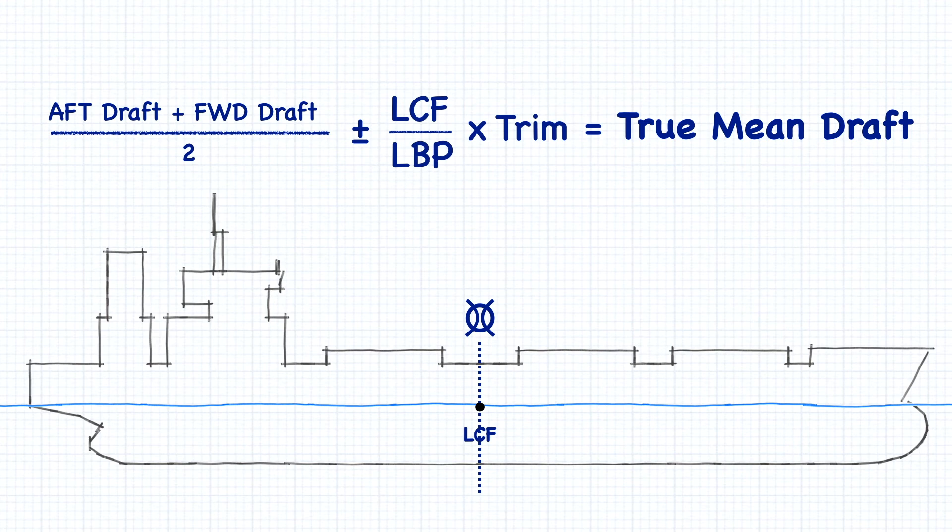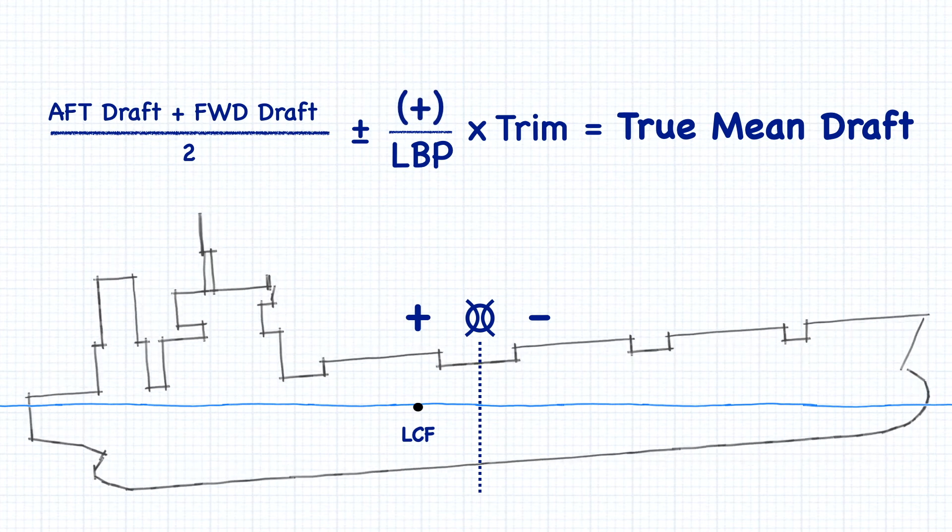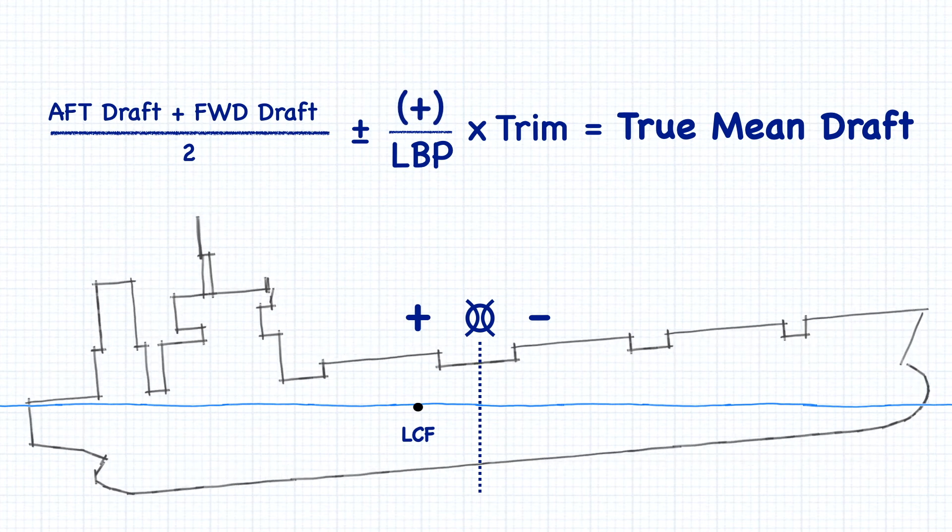One way to keep track of all of this is to use the correct signs when you're calculating your correction. Always think of values that are aft of midships as being positive, and values forward of midships as being negative. If the center of flotation is aft of midships, then its distance from midships will be a positive number. If the ship is trimmed by the stern, then the value of the trim should also be considered positive. The result is a positive correction.